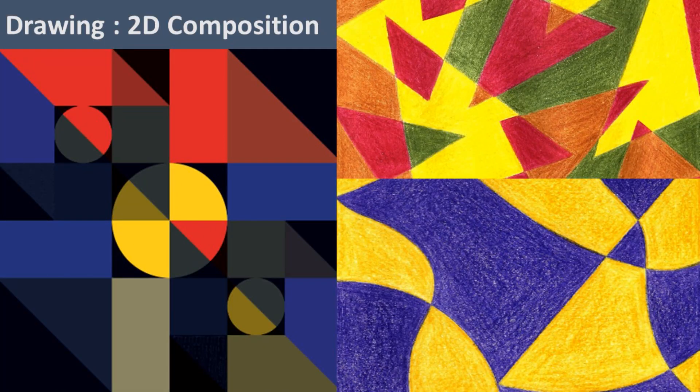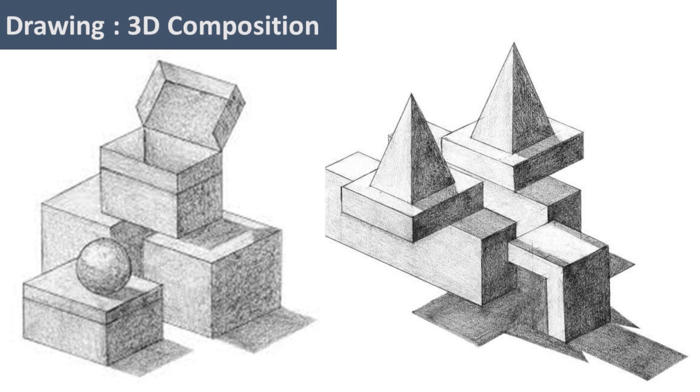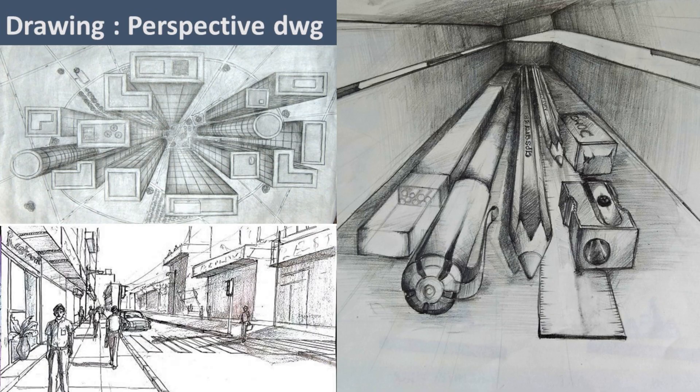Now let's see about 2D compositions. As you can see, there are geometric figures and shapes interlocked in the 2D compositions. You will be asked to merge 2 or 3 shapes and create a composition. Coming to the 3D compositions, you have to create basic 3D shapes as per the questions. And for perspective drawing, you have 1-point perspective and 2-point perspective as well.